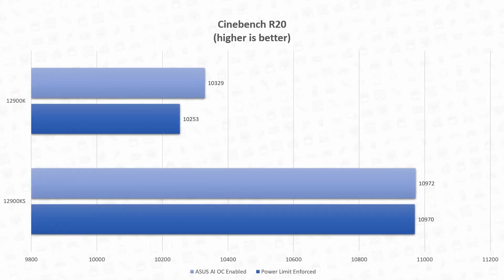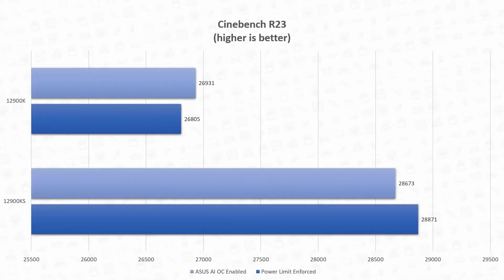For our first benchmark, Cinebench R20, we can see an almost 7% gain in performance with power limit enforced, and with ASUS AI Overclock enabled, a 6% increase in performance. For Cinebench R23, with power limit enforced, we can see an almost 8% increase in performance, and a 6.5% gain with ASUS AI Overclock enabled.